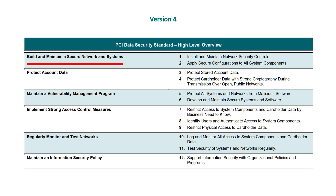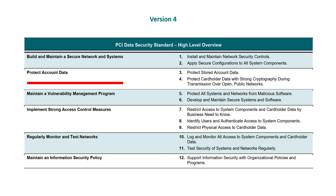Now let's look at version 4. Domain 1: Build and Maintain Secure Network and Systems. Requirement 1: Install and maintain network security controls. Requirement 2: Apply secure configurations to all system components — slightly different wording. Domain 2: Protect Account Data. Requirement 3: Protect stored account data. Requirement 4: Protect cardholder data with strong cryptography during transmission over open public networks.